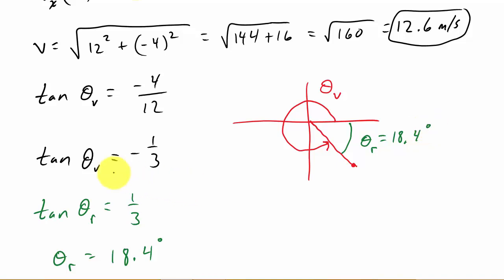So now we can go and find our theta. So theta sub v well that's going to be 360 minus our reference angle which will give us this. So that's minus 18.4 degrees. So 360 minus 18.4, that will give us theta sub v is equal to 341.6 degrees. So there's your direction and here's your magnitude.